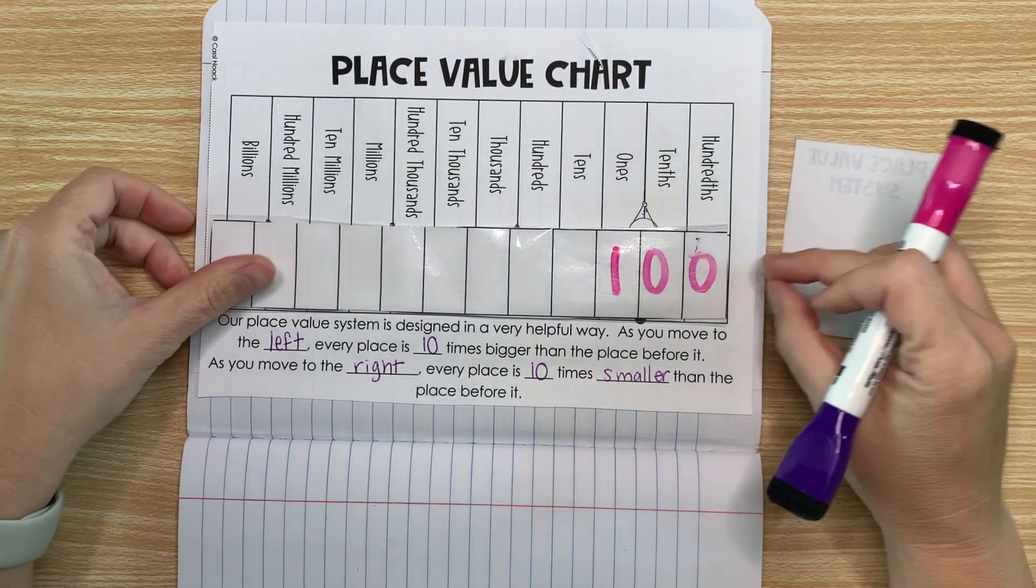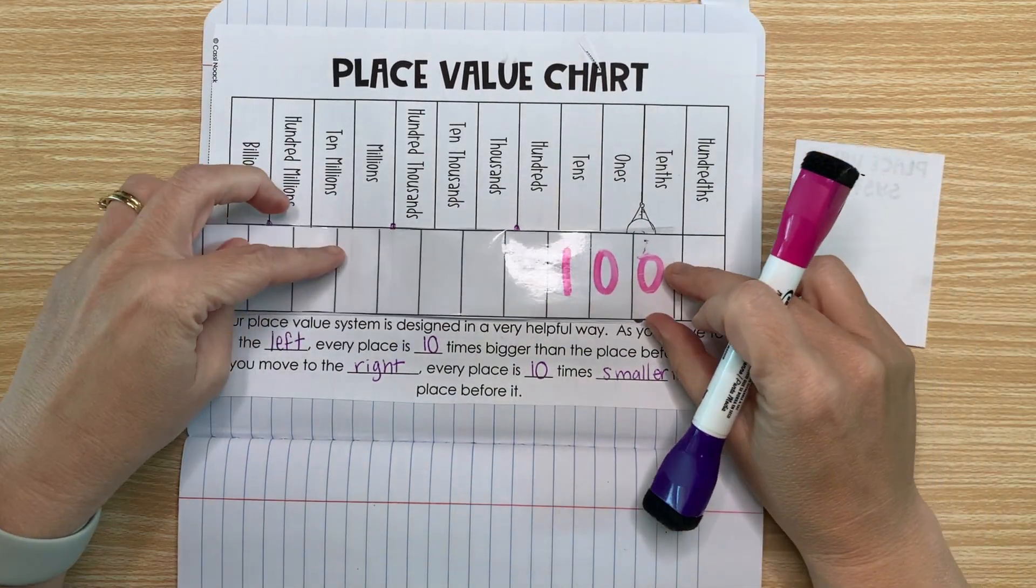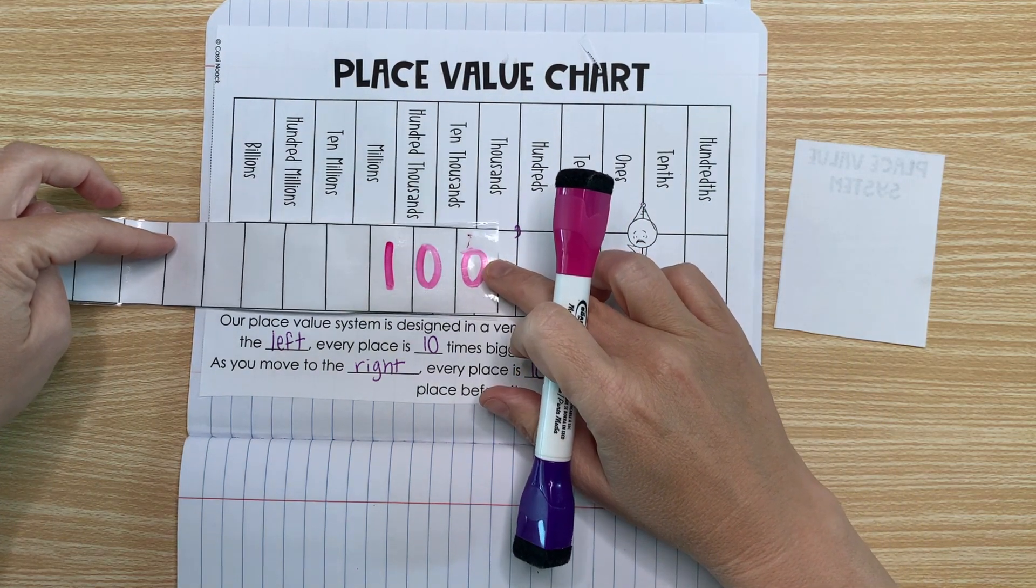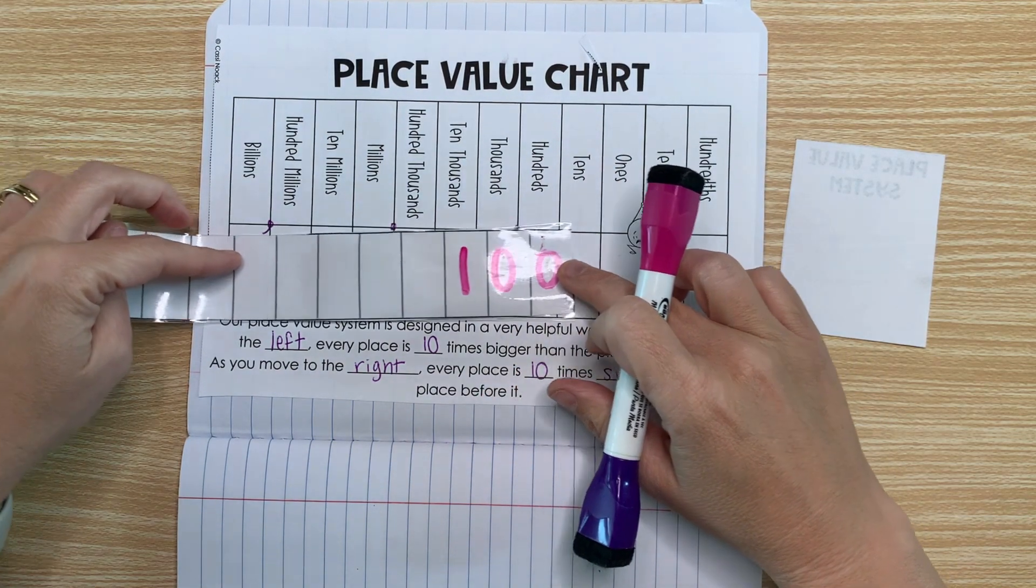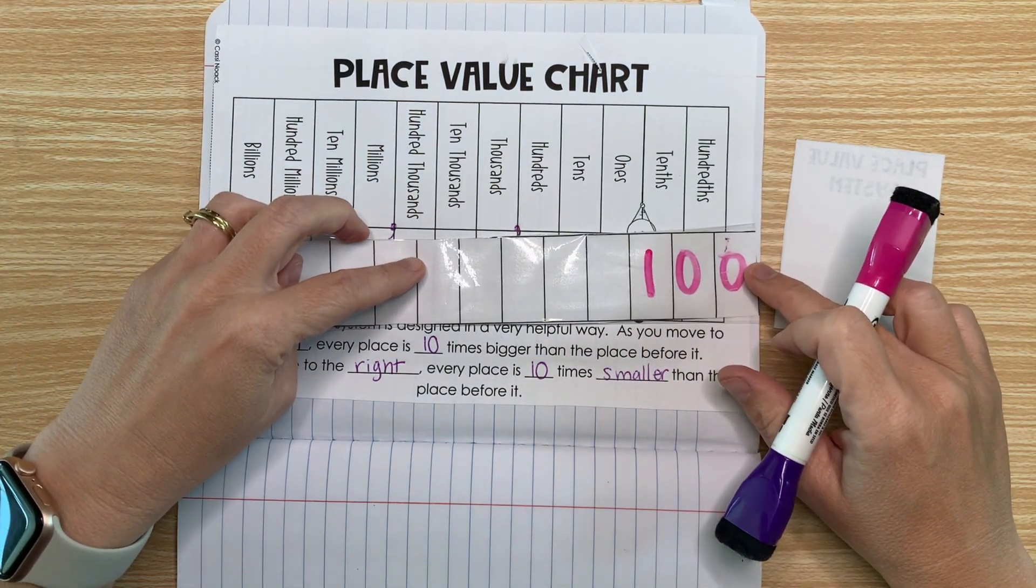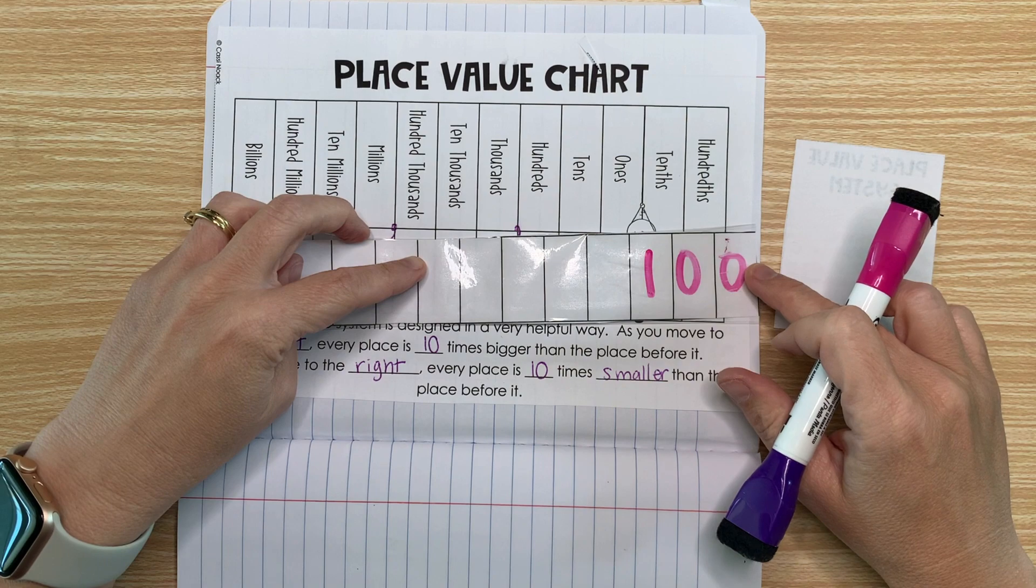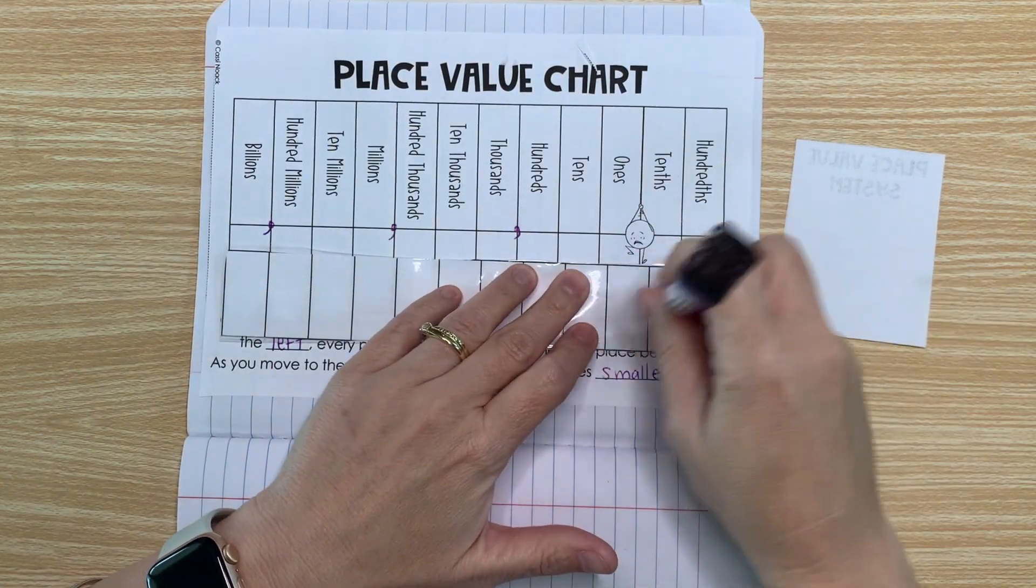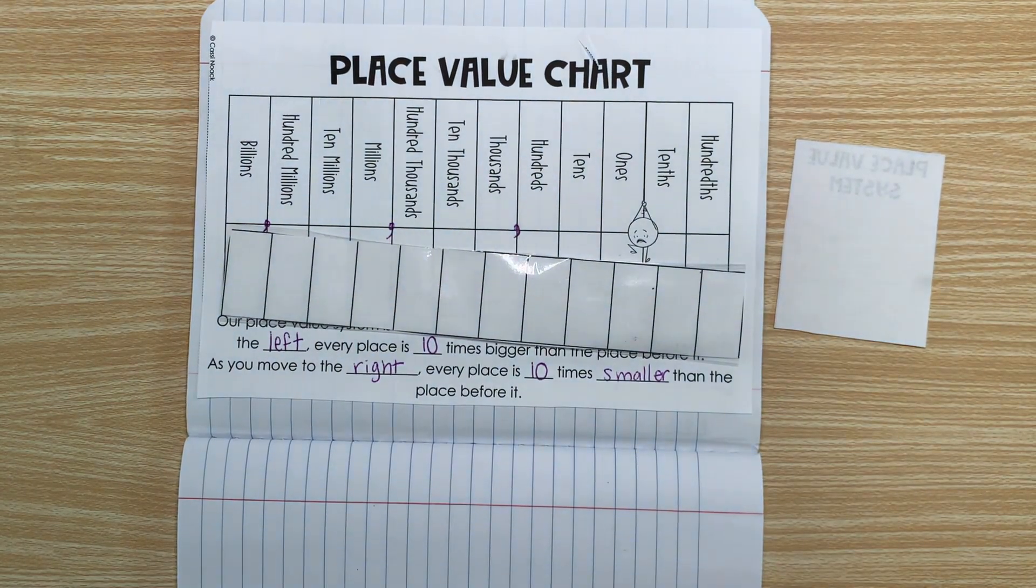So that is what's special about the design of our place value system. When we take numbers and we move them through the place value system to the left, they always get 10 times bigger. And if we take that same number and we move it through our place value system to the right, that is going to get 10 times smaller. It's going to be one tenth of the original number. So you can use this to multiply and divide pretty easily.